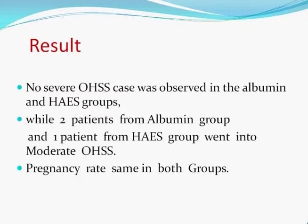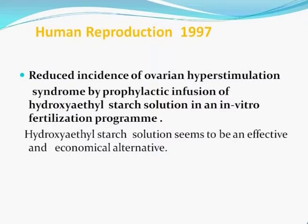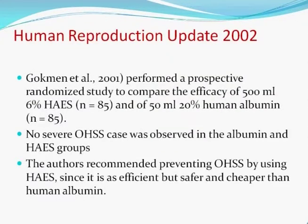We observed that no severe OHSS case was seen in either group, while two patients from the albumin group and one patient from the HAES group went into moderate OHSS. The pregnancy rate was similar in both groups. Literature from Human Reproduction 1997 also reported a reduced incidence of hyperstimulation by prophylactic infusion of hydroxyethyl starch and considered it an effective and economic alternative to albumin. A 2001 randomized study by Gorkman also observed no severe OHSS in both groups and recommends HAES as it is as efficient as albumin but safer and cheaper.